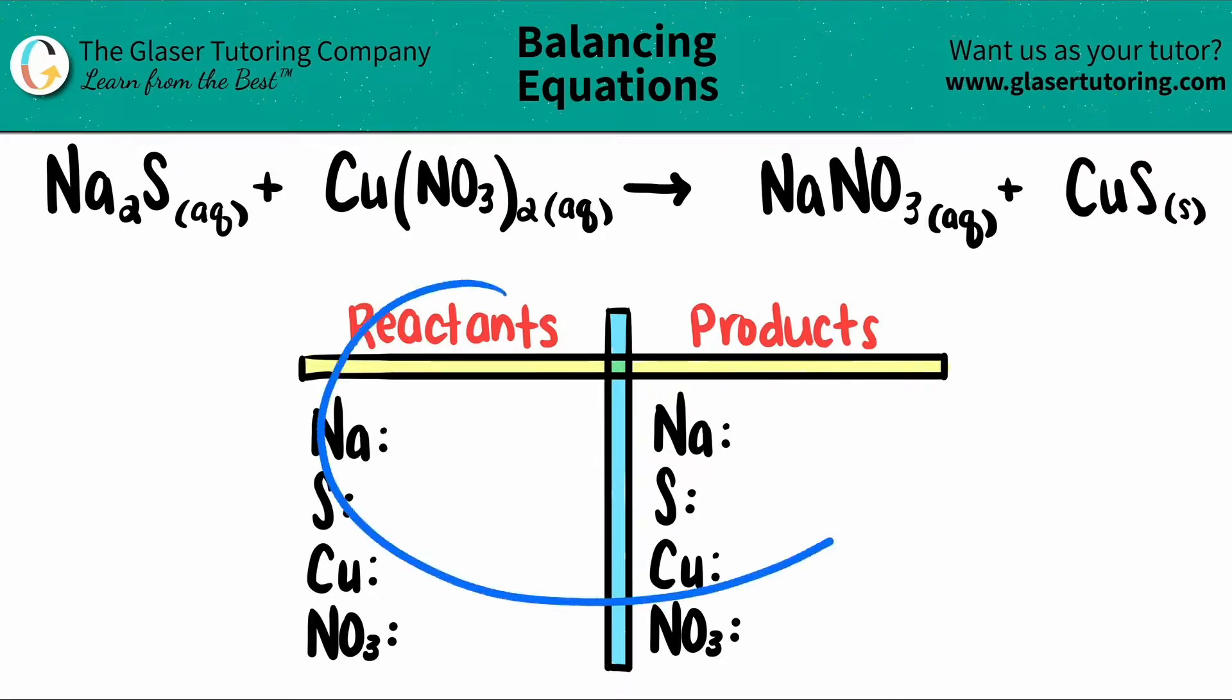I already wrote out a chart for us with the elements that I see on both the left and the right side. I also want to say that I did incorporate the polyatomic nitrate. You can include polyatomics in your balancing chart if they are on the left and the right side. Just makes balancing a little easier.